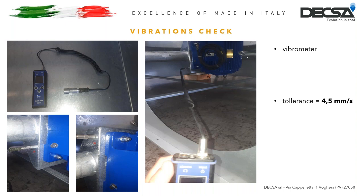Now we can proceed with the control of vibration using the vibrometer. This is what we use — it's equipped with an extendable cable at the top of which there is a magnet. We must first fix it at the low point of the support on which the motor is installed. Once this is done, exit the unit, turn on the vibrometer — which will take a few seconds to set itself — then start the motor, leaving it running for about a minute, and detect the data that the device provides.